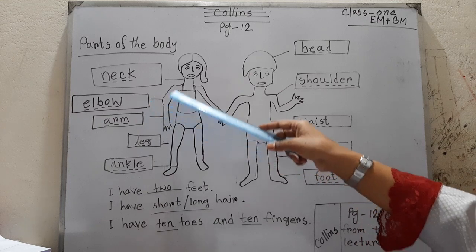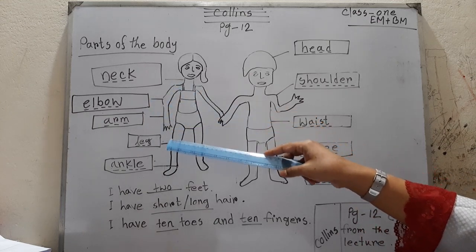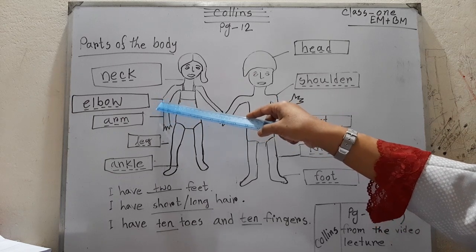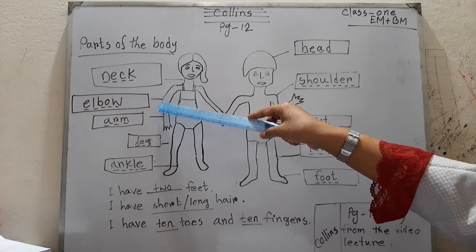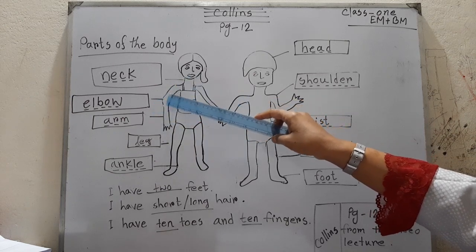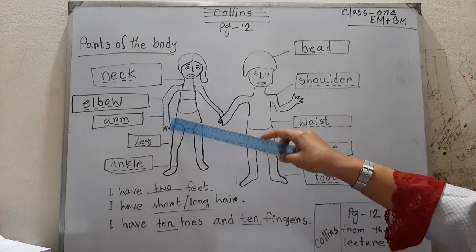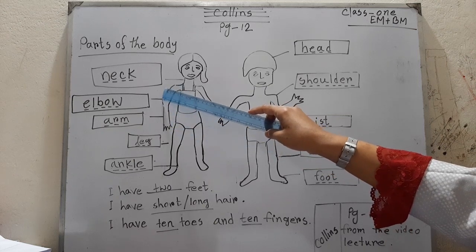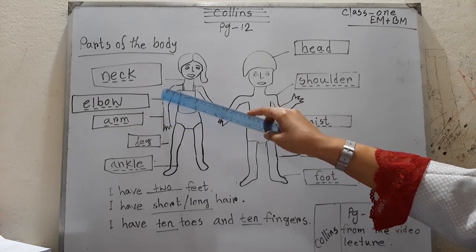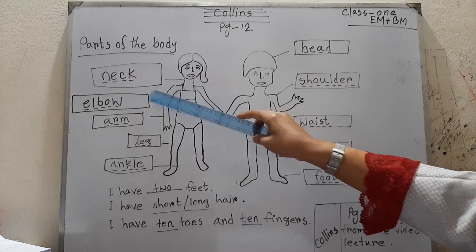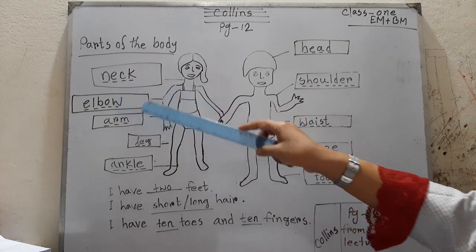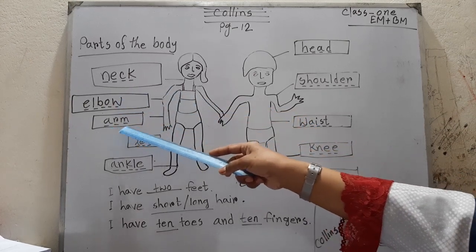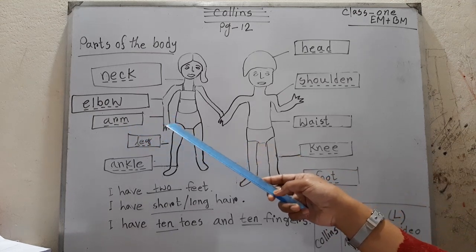Then: elbow — E-L-B-O-W. Elbow means 'konui' in Bengali. This is the upper arm and this is the lower arm — connecting the upper arm and lower arm is the elbow.